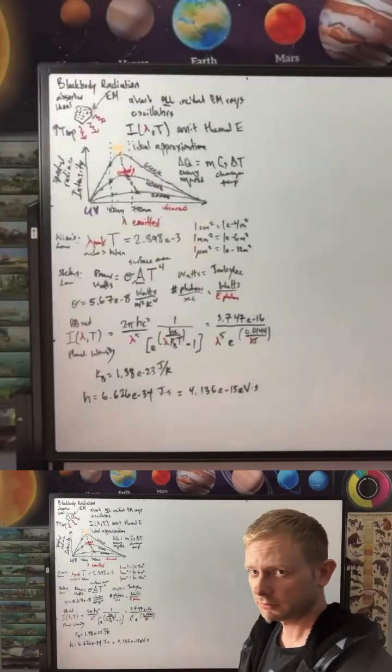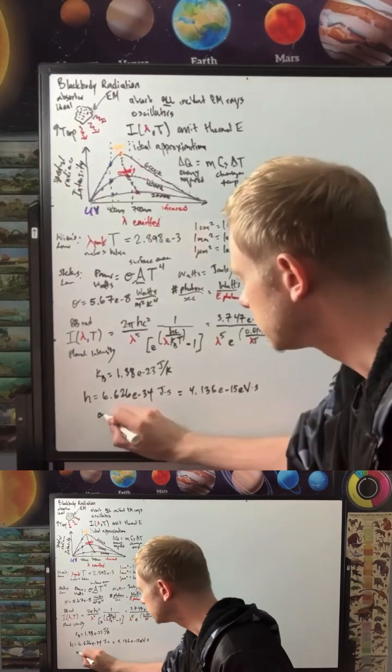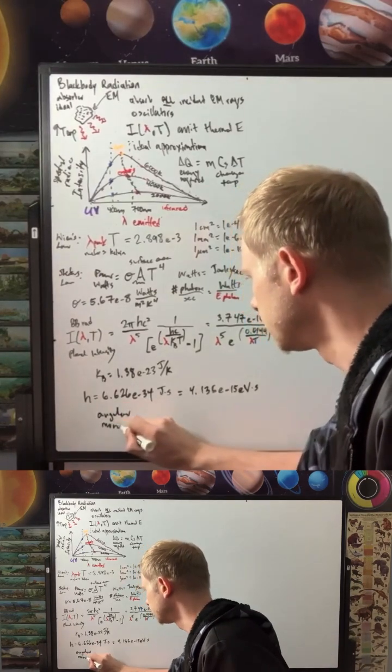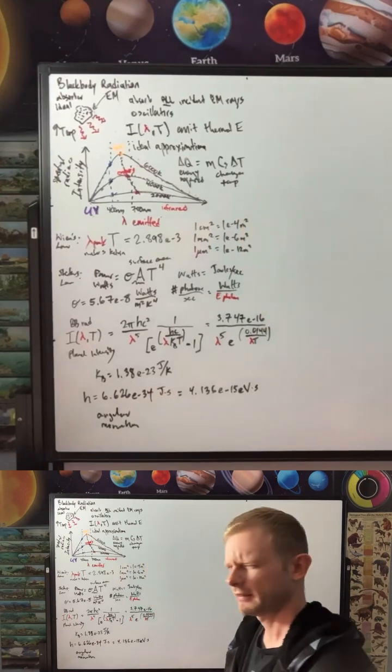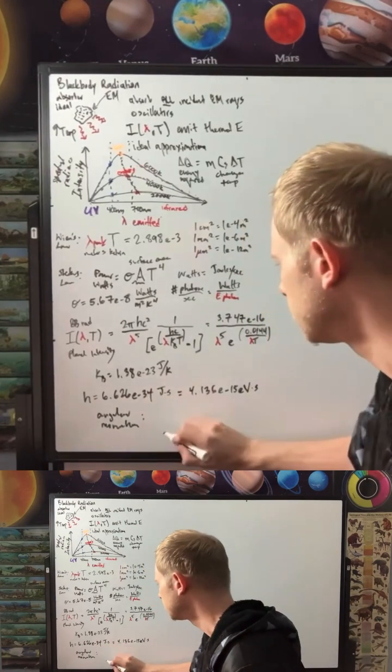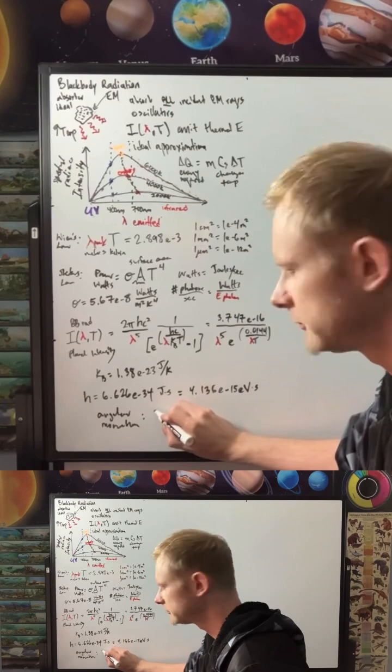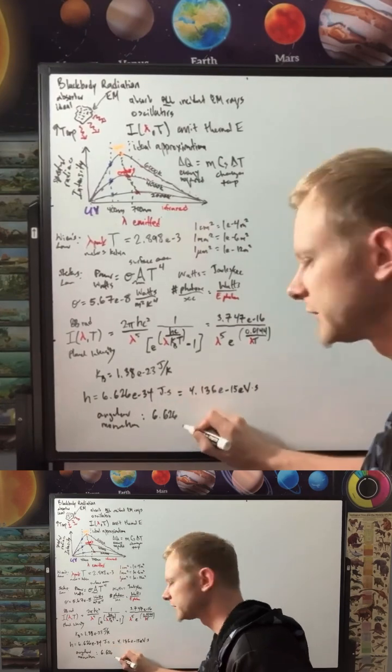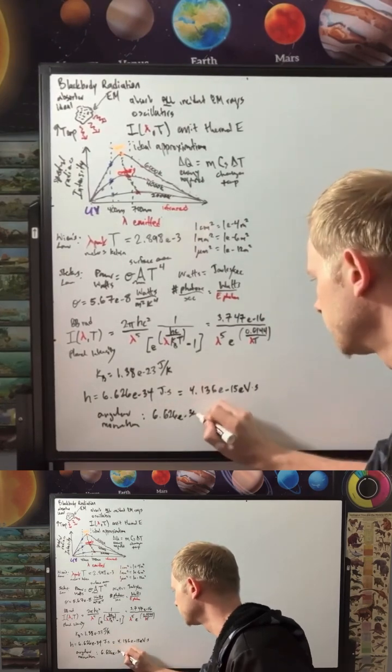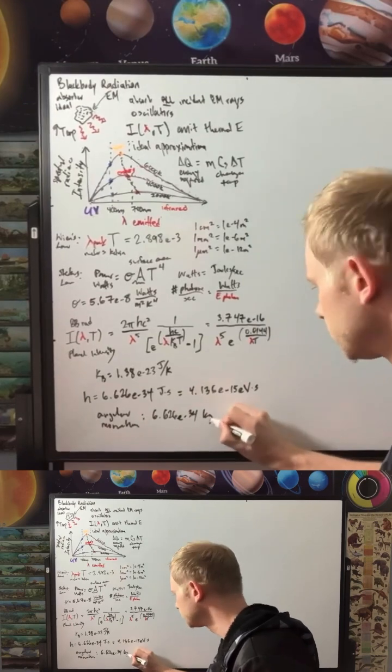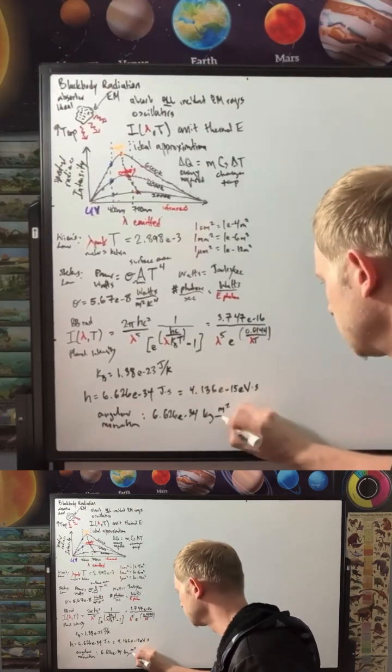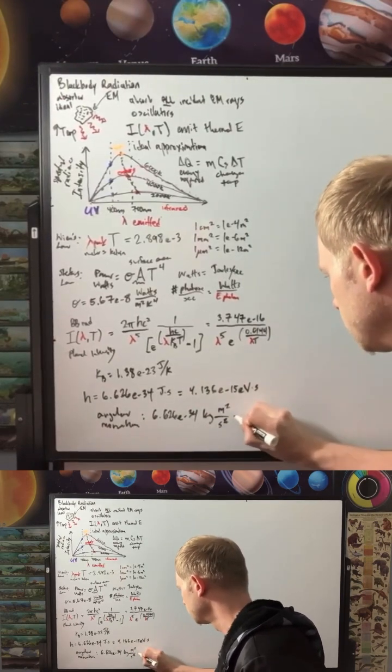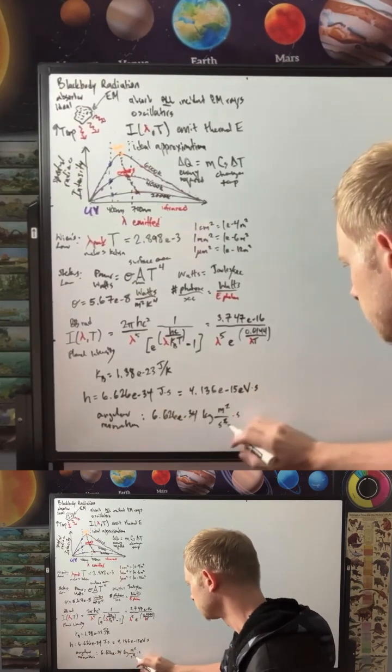But we can also say that these are units of angular momentum. Angular momentum, so that means that this is actually more equal to 6.626e to the negative 34 kilograms times meters squared over seconds squared, and then we'll just multiply that by seconds as well.